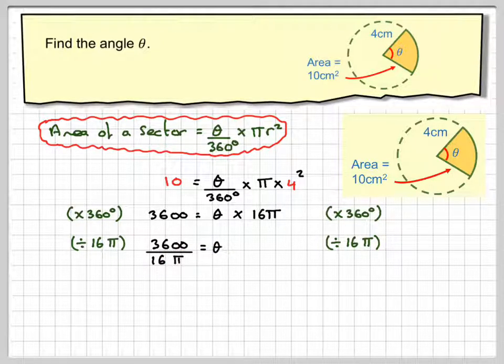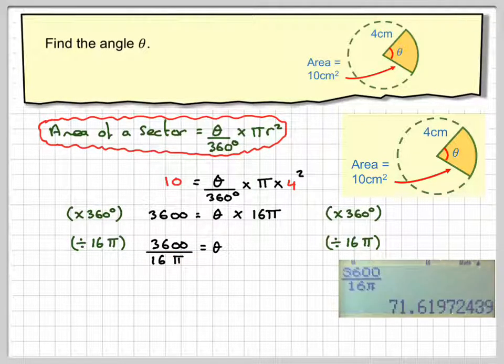Now we work this out on our calculator using the fraction button. So we put 3600 over 16π and we get 71.6197.